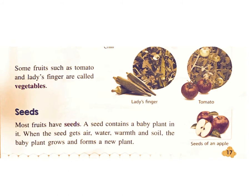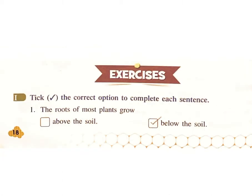Some fruits such as tomato and ladies finger are called vegetables. Seeds: Most fruits have seeds. A seed contains a baby plant in it. When the seed gets air, water, warmth, and soil, the baby plant grows and forms a new plant.